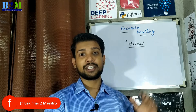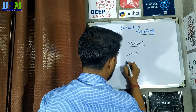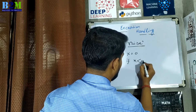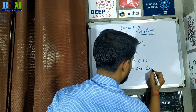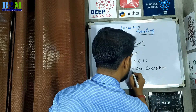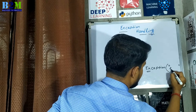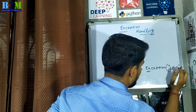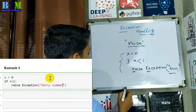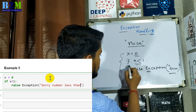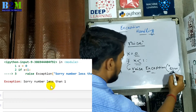You can raise an exception yourself using the raise keyword. For example, x equals zero — you define it, and if x is less than one, then you can raise an exception. The raise keyword and Exception are both keywords. You can pass your own message, for example 'error'. When this code is executed, x is zero so the condition is met, it raises an exception, and the exception message will be 'error'.